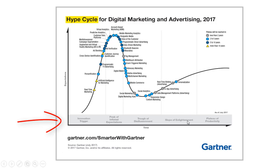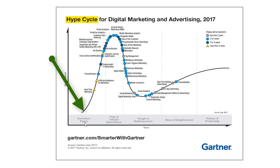Let's review these five phases in more detail. The innovation trigger is the first phase, when a technology breakthrough creates early excitement in the market and starts to become popular. In this phase, the adoption amongst a select few early adopter organizations picks up pace.